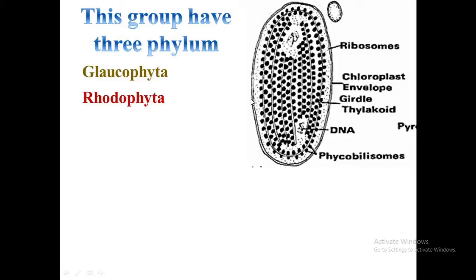Rhodophyta have one thylakoid per band with no chloroplast endoplasmic reticulum membrane, and this phylum has chlorophyll A along with phycobiliproteins. Flagellated cells are completely absent in this phylum without any exception, and the storage product is floridean starch.